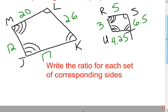Starting with my larger quadrilateral, I should first look at the corresponding angles to see if they're congruent. Angle M and angle R both have four arcs — those two are congruent. Angle L and angle S each have a single arc. Angle T and angle K each have a double arc. And angle J and angle U have triple arcs. So yes, I have my four angles matching up — corresponding and congruent — in the two quadrilaterals.